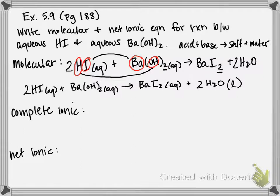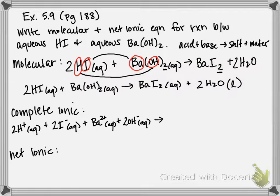So our complete ionic is going to be 2H+ aqueous, plus 2I- aqueous, plus Ba2+ aqueous, plus 2OH-, and that 2 applies to the entire hydroxide ion, aqueous. And then on the other side we have barium iodide, which is a soluble salt. It's a soluble strong electrolyte, therefore it breaks up into its ions to produce Ba2+ plus 2I-. And once we get to water, because it's not aqueous, it's a liquid, it does not break up into its ions. So we just keep it as H2O liquid.